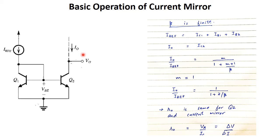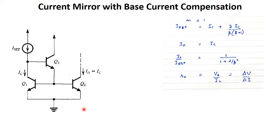There are two discrepancies: first, I-out should be less dependent on β; and second, output resistance should be very high. To overcome the first discrepancy, a circuit with a third transistor Q3 was introduced, giving three transistors Q1, Q2, and Q3, where M is always equal to 1. The relation I-out over I-reference becomes 1 over (1 + 2/β²), so I-out now depends upon β² rather than β, making it less dependent on β.